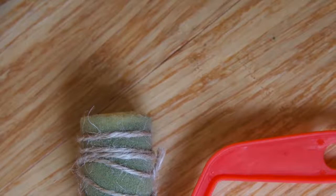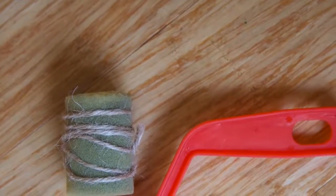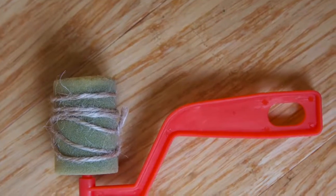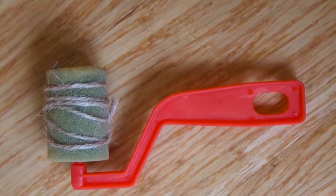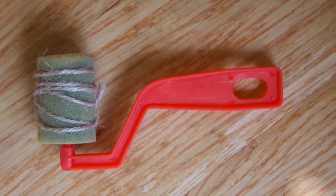All you'll need to do is wrap your string around the spongy part of the roller nice and tight. You can go around as many times as you wish before finishing with a tight knot and cutting off the loose ends.